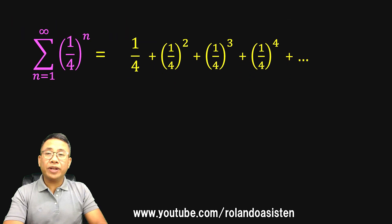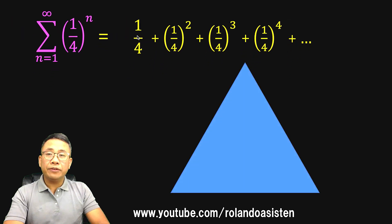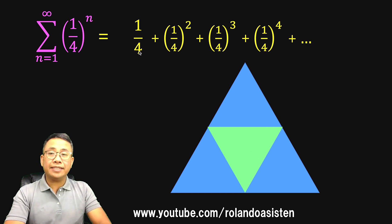Let's begin by visualizing first our first add-on here, 1/4. If you have this blue equilateral triangle and divide that triangle into four equal parts, we have 1, 2, 3, 4, and we take one part out of those four parts, then the area of this green triangle is this 1/4.